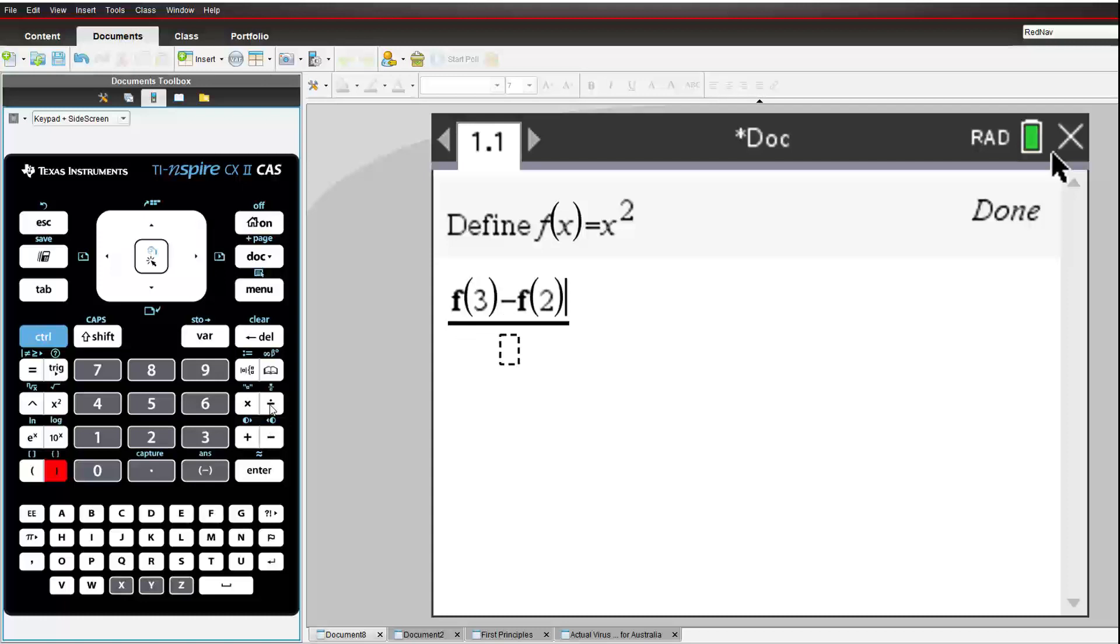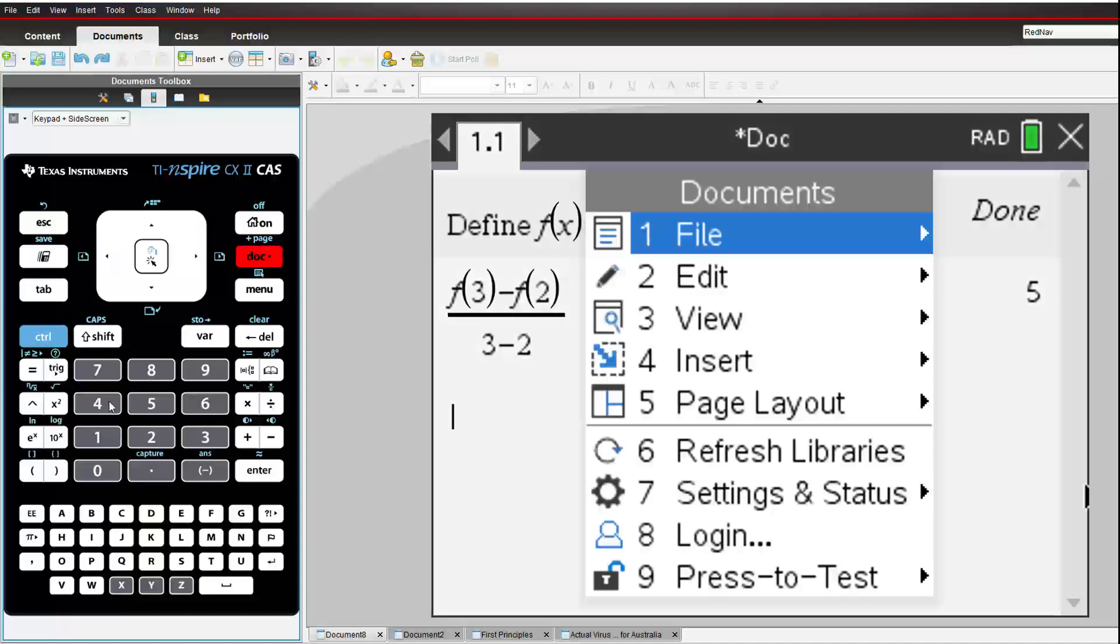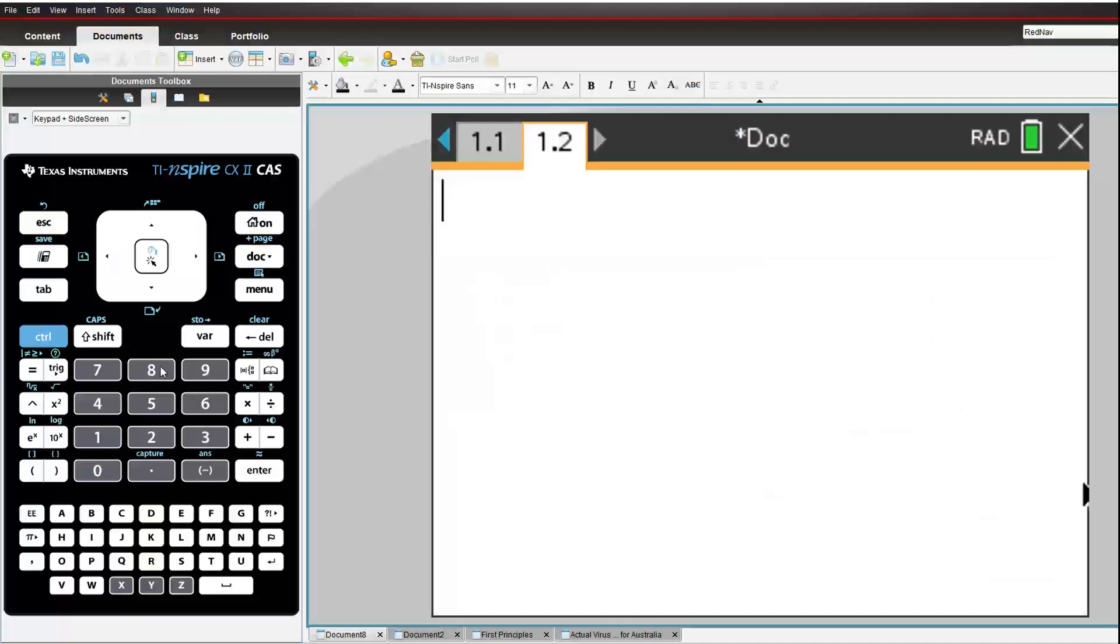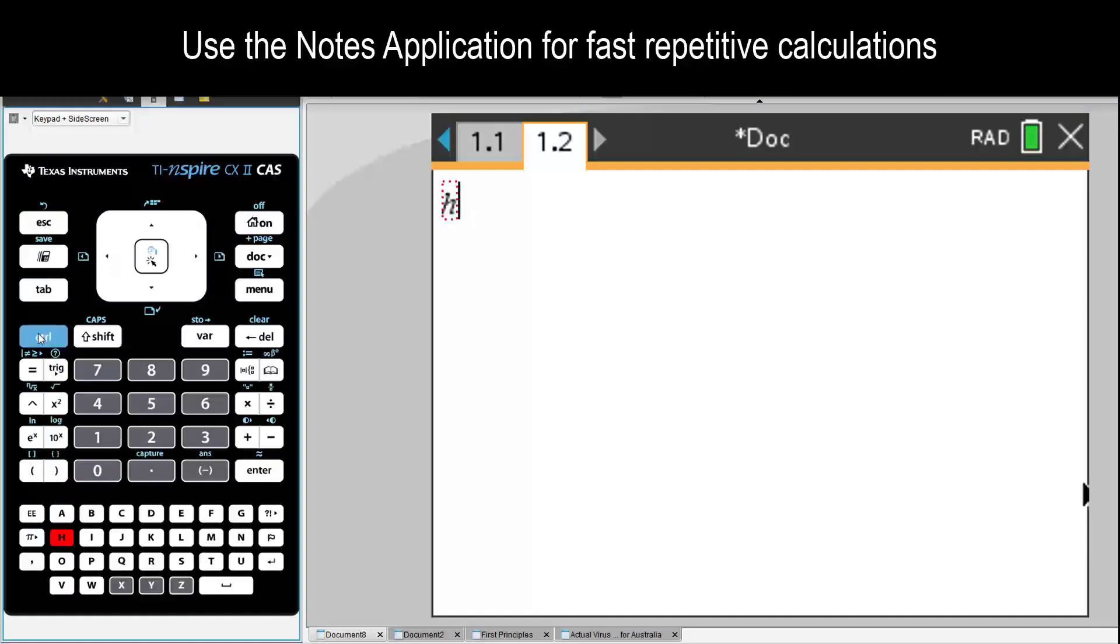We can calculate the gradient, rise over run. The approximation for the gradient at x equals 2 is not great, but it can be improved by moving the second point closer and closer to where x equals 2.